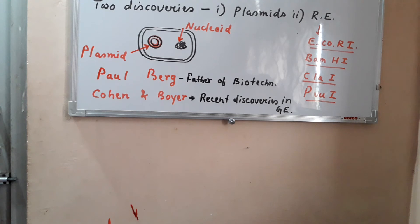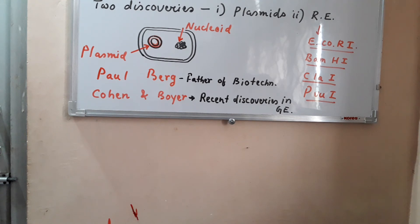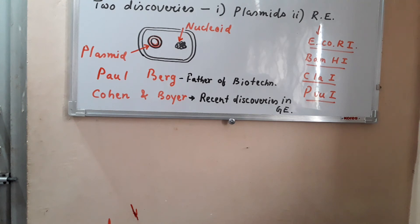Plasmids can be used as vectors. A vector is used to carry foreign DNA from one organism into another organism. A vector is a DNA — usually a plasmid — that can be cut and inserted with a new gene or new DNA, and can then be transferred into a host and replicated to the next generation.